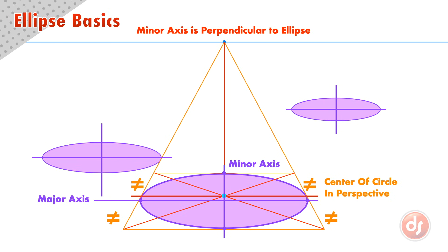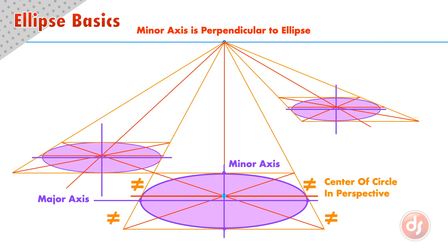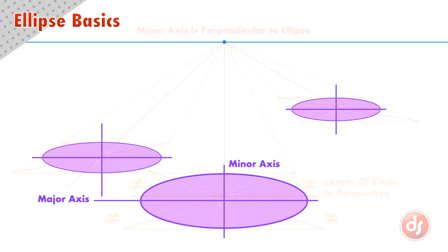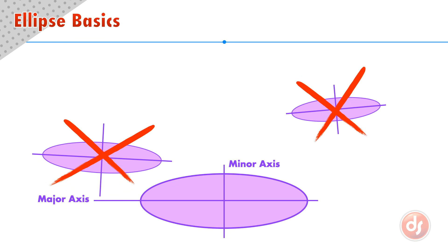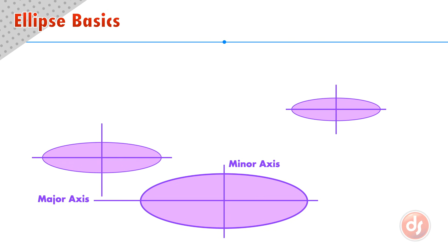This happens because the minor axis needs to be perpendicular to the plane of the ellipse. Since the plane of the ellipse here is horizontal, the minor axis must be vertical. Because the minor axis is perpendicular to the plane of the ellipse, it will cross the even mathematical center and go through the center of the ellipse in perspective. So all horizontal ellipses must be drawn flat and parallel to the horizon.